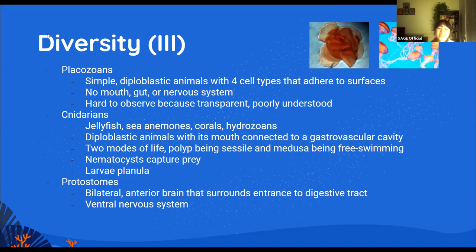Now that we've moved on from all of the animals that are not triploblastic, we can go to the triploblastic ones. Remember, the two main groups are protostomes and deuterostomes. Protostomes are bilateral. They have an anterior brain at the top of the body, and this brain surrounds an entrance to a digestive tract. They have a central nervous system at the back — the front is dorsal and the back is ventral.